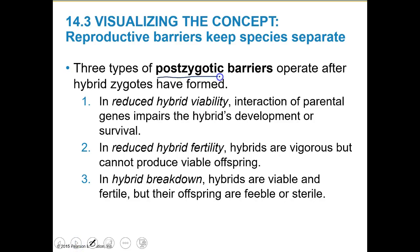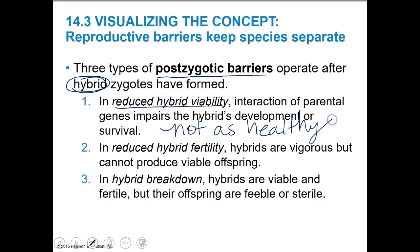Now, postzygotic barriers — after a zygote has already formed. This is typically where we have hybrids. First is reduced hybrid viability: the interaction of parental genes impairs the hybrid's development or survival — it's just not as healthy or strong. Reduced hybrid fertility is usually the one we see most: the hybrid is healthy, but it just can't produce babies. You can't perpetuate a species without being able to reproduce.